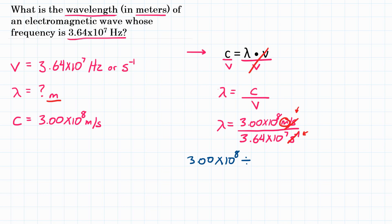Since the denominator is in scientific notation, we need to make sure that that all stays together. So one way to do that is to open parentheses and then put 3.64 times 10 to the 7th, and then close parentheses and hit equals.